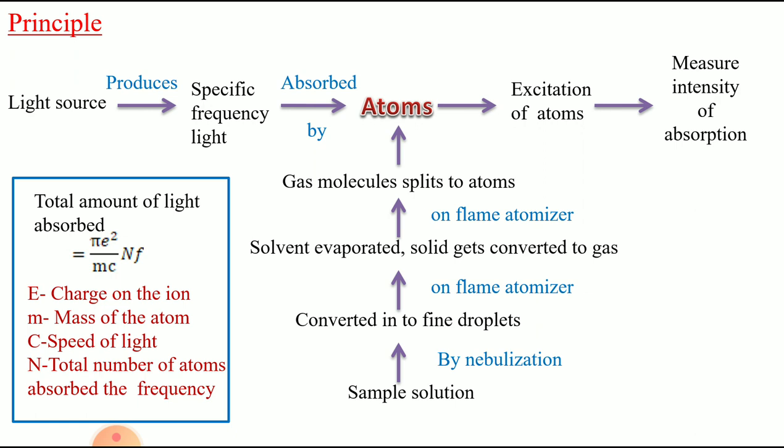The main aim of the flame is to convert the sample solution and molecules into atoms. From the light source, a specific frequency light is produced, which is absorbed by the atoms. When the atoms absorb the light, they undergo excitation and then return to their ground state. During this process, we can measure how much radiation is transmitted or absorbed. The total amount of light absorbed equals pi times e squared divided by mc, times nf, where e is the charge on the ion, m is the mass of the metal, c is the velocity of light, and n is the total number of metal atoms absorbing the specific frequency line.